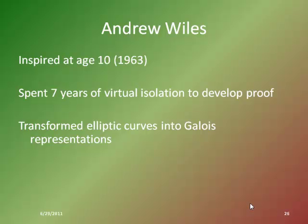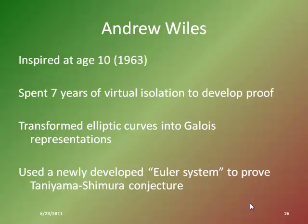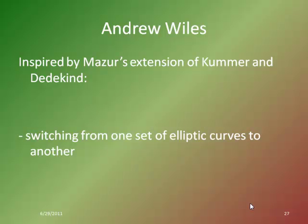As he gets further into this, he starts recognizing the need for assistance. He contacted his former advisor at Cambridge, who suggested he try a new Euler system that a couple of students had been working on — he might be able to use it to prove Taniyama and Shimura were correct. Wiles is taken in another direction by Mazur, who suggests extending the work of Kummer and Dedekind on ideals — perhaps switching from one set of elliptic curves to another, connecting to his work transforming elliptic curves into Galois representations.